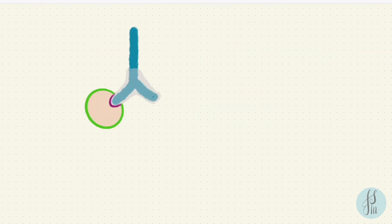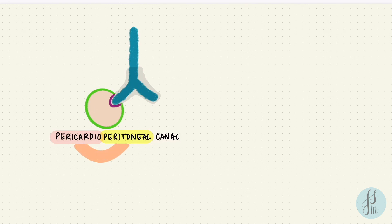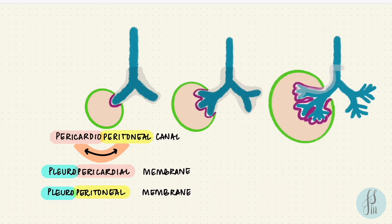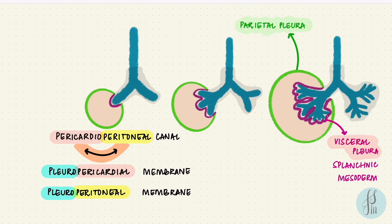The bronchial buds with their mesenchyme push into canals called the pericardioperitoneal canals, which form the pleural cavities. These canals connect the pericardial and peritoneal cavities. As the buds grow, those communications have to close via folds that form membranes: a pleuropericardial membrane separates from the pericardial cavity, and a pleuroperitoneal membrane separates from the peritoneal cavity. The visceral pleura, attached to the lung, develops from splanchnic mesoderm, while the parietal pleura toward the body wall comes from somatic mesoderm.